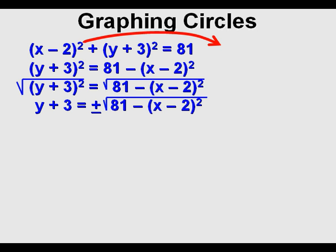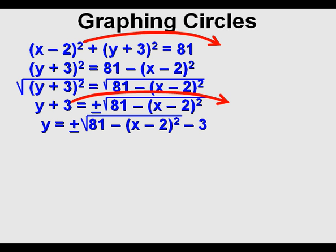And finally to solve for Y, we have to get rid of the 3 on the left side of the equation, and we're left with y equals plus or minus √[81 - (x - 2)²] and then subtract 3 from that.